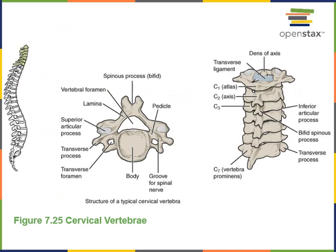Cervical vertebrae are numbered C1 through C7, starting with the most superior. They typically have a bifid spinous process — a split tip. The body of the cervical vertebrae is relatively small and the vertebral foramen is relatively large. There are also transverse foramina in the transverse processes of cervical vertebrae, where the vertebral arteries and veins travel up and down from the brain.